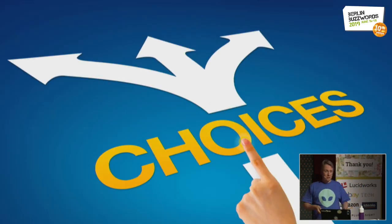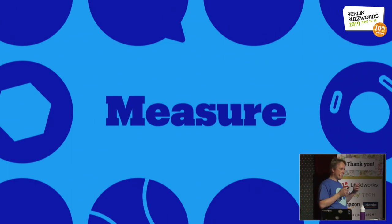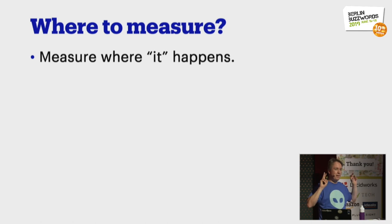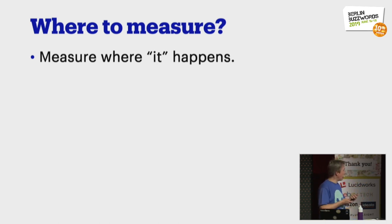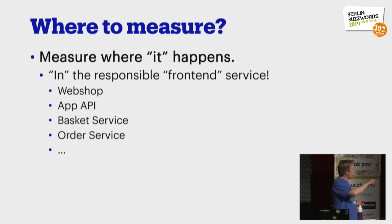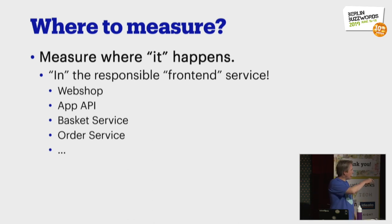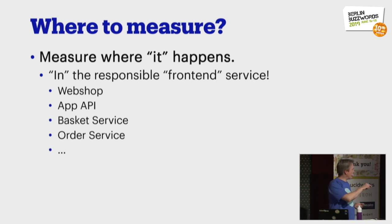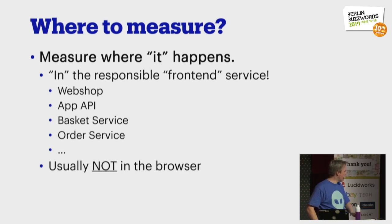Let's start with the start of the flow: measuring. The fundamental choice we made is that we measure where it happens — where we are absolutely sure the thing happened that the user did or that we did. That means most measurements are done in some kind of front-end, close to the user service, either the webshop or the API that services our app. Or very close to a system that owns the event that actually happened, like our basket service or our ordering service. This means we are not measuring these things in the browser, because in the browser it's always a side effect.